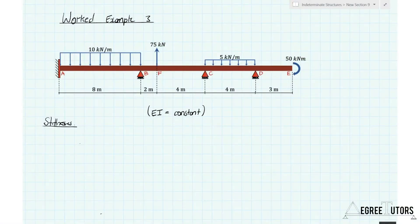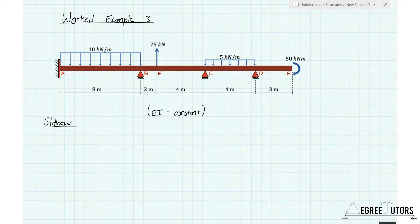This structure is similar to example 2, with the exception that we have a cantilever end at E and we have a moment applied to that cantilever. We also have an upwards pointing point load between B and C at point F, so that's going to mix things up a little bit in terms of our distribution, but we just have to follow the same rules and procedures that we've established so far.